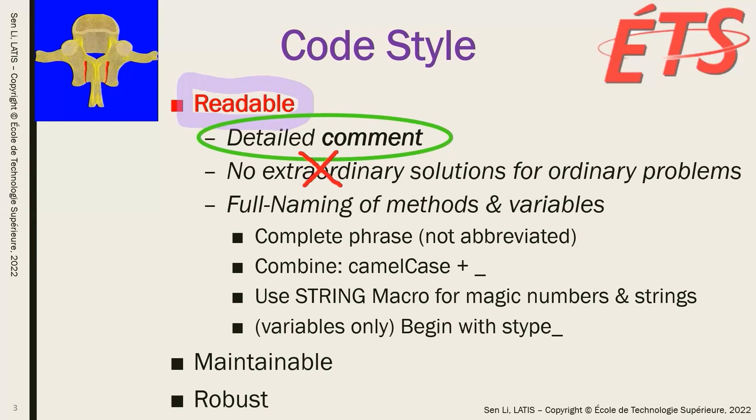For the naming of methods and variables, we try to include as much information as we can, no abbreviation. We use camel case for a short phrase, and use underscore to connect the multiple phrases together to be the name of a variable or a function. We use string macro to replace any magic numbers or strings. For variables only, we always start with the type of the variable and connect with underscore.